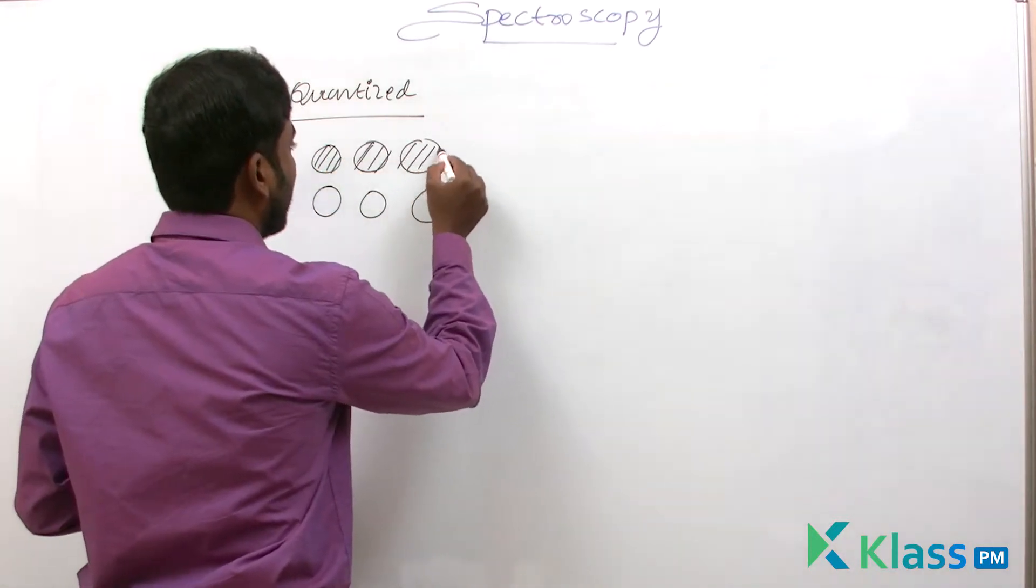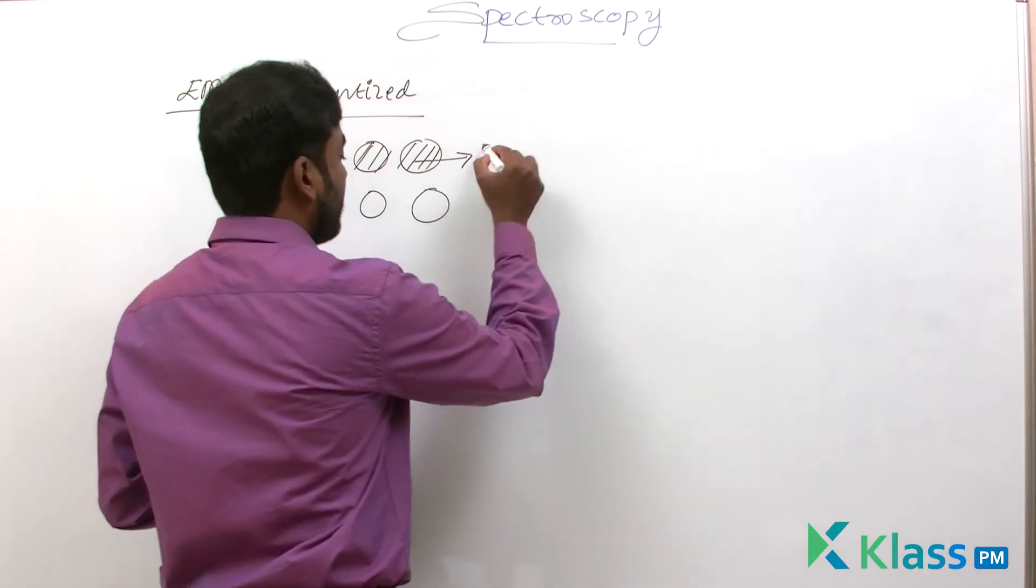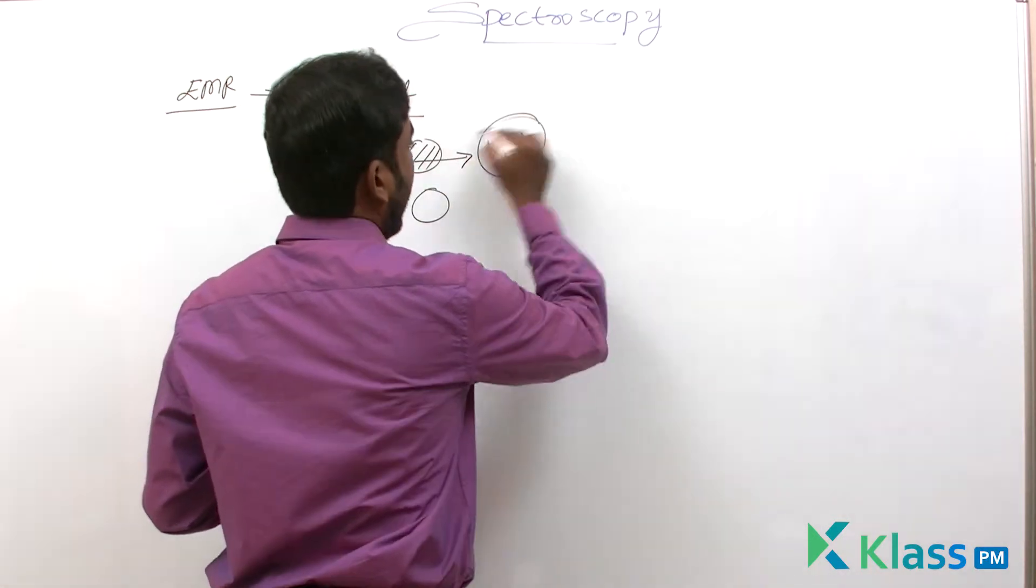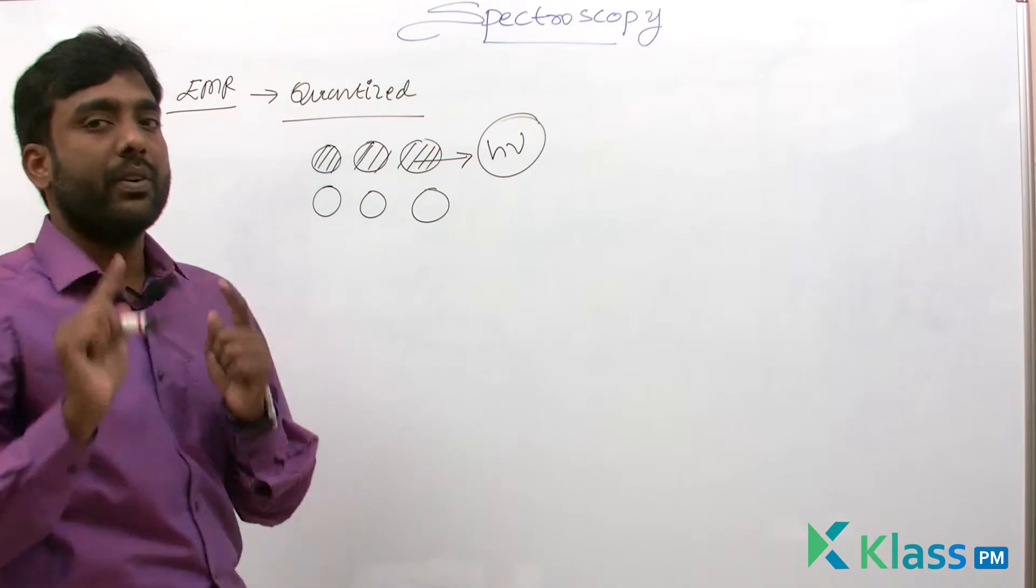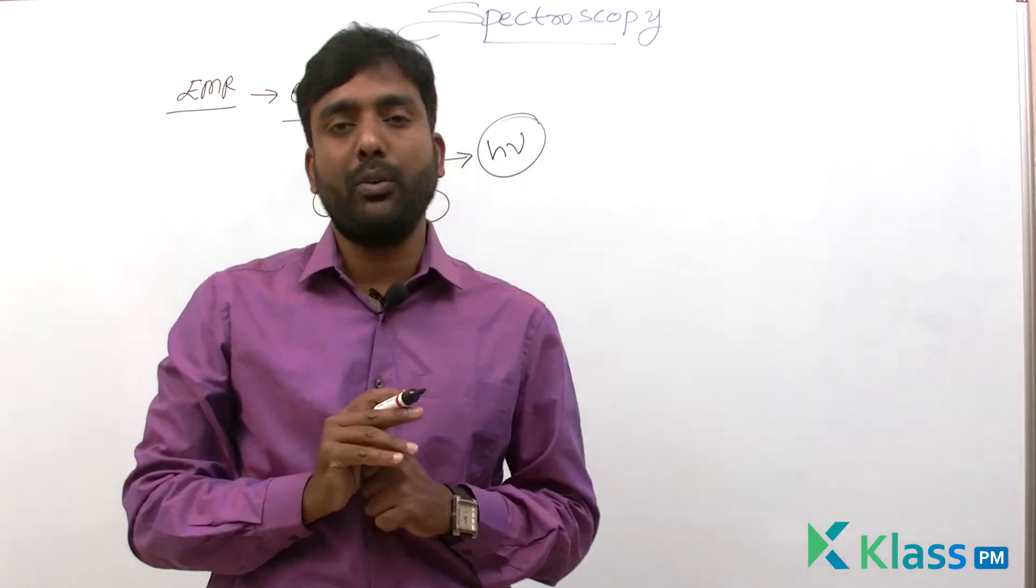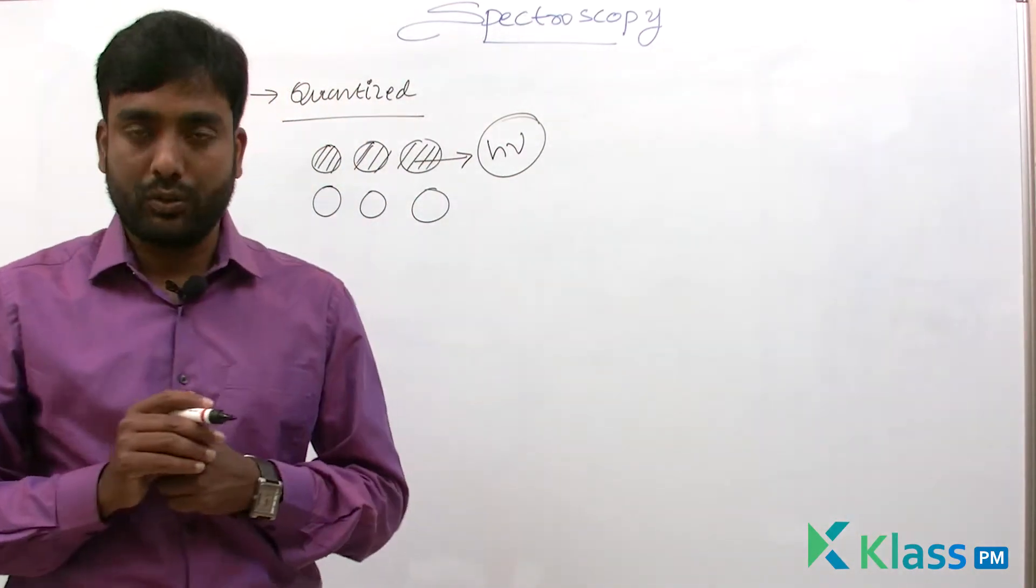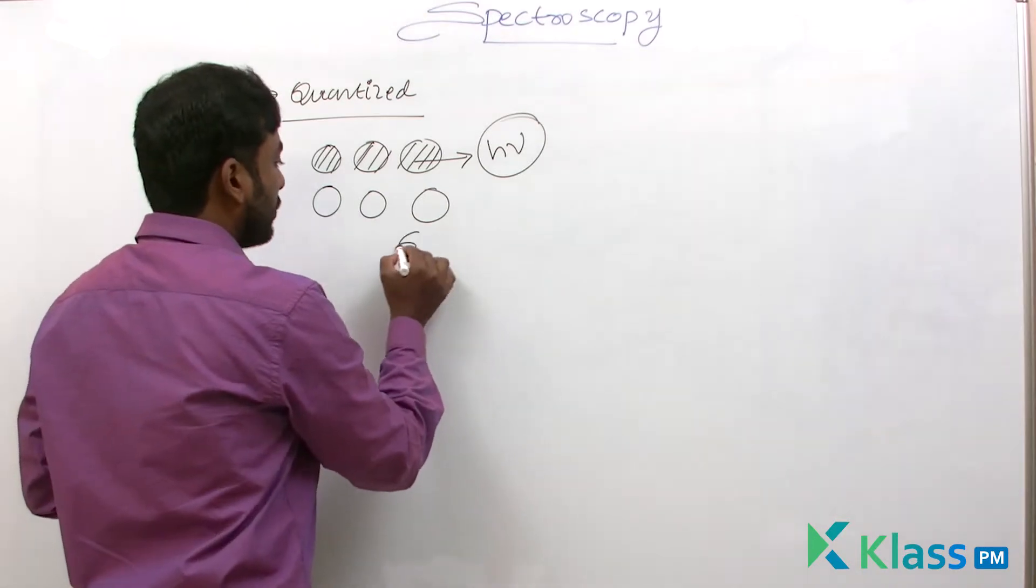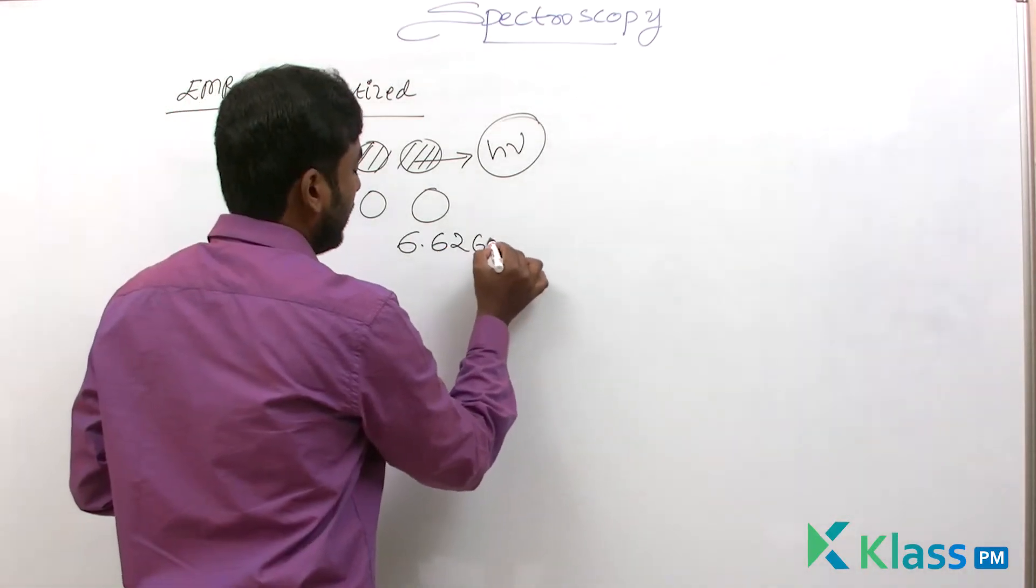Each packet has energy H nu, where nu is the frequency of radiation and H is the Planck constant. The value of H is 6.626 × 10^-34 joule-seconds.